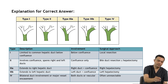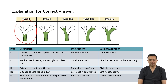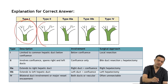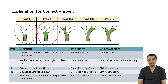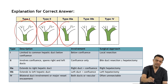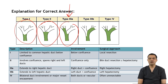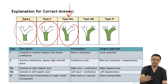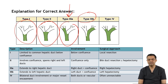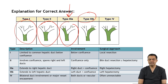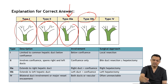In type 1, the tumor involves the common bile duct below the confluence. In type 2, the tumor reaches up to the confluence. In type 3a, the confluence is involved and the right duct is involved but the left duct is uninvolved. In type 3b, the confluence is involved and the left duct is involved but the right duct is spared. If the confluence and both right and left ducts are involved, it is type 4.